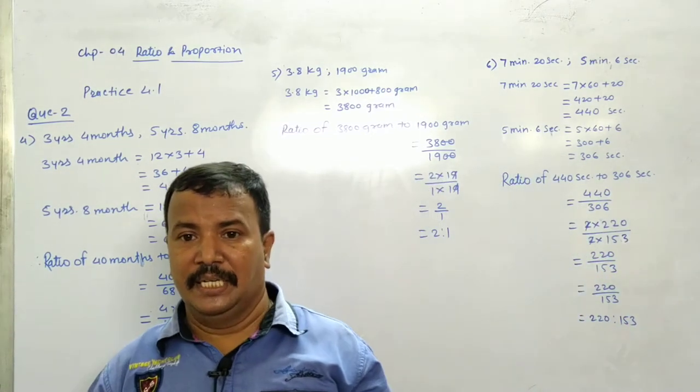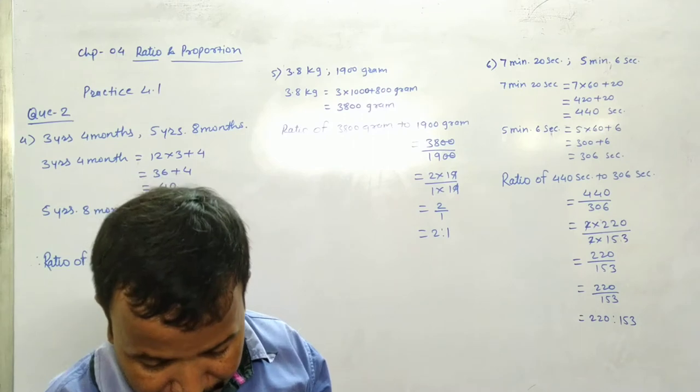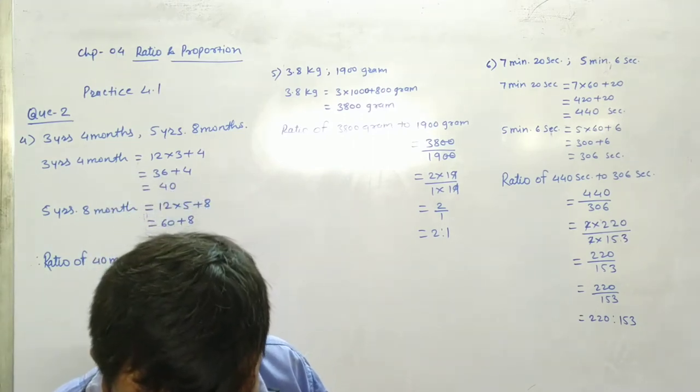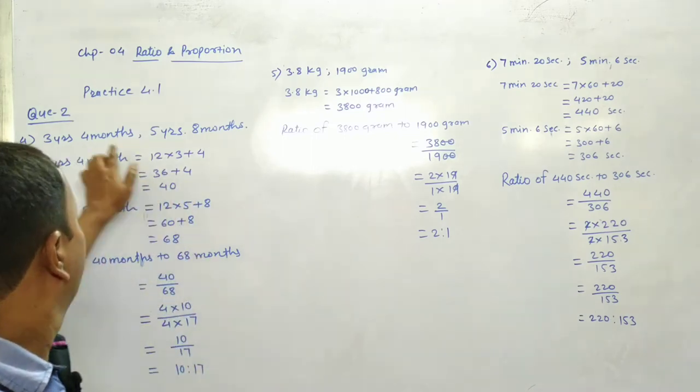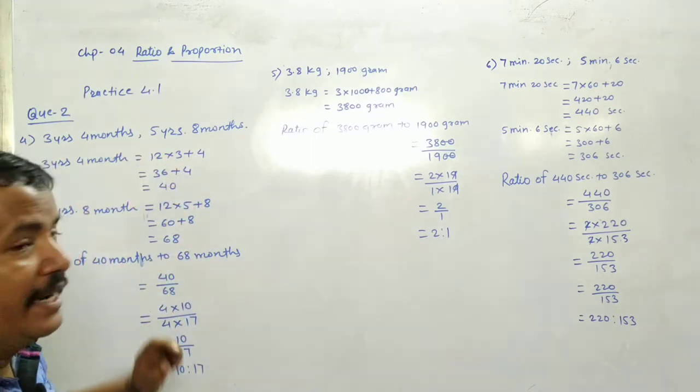Now see, fourth question is - three years, four months, five years, eight months. Convert the years to months.